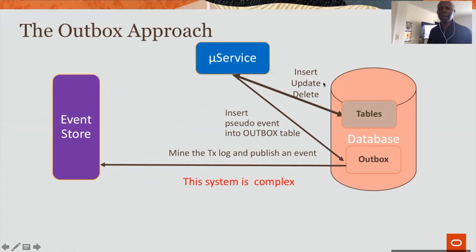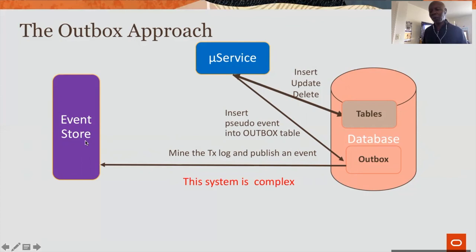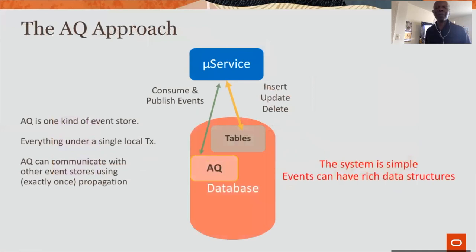The outbox solution works like this. You get a connection, make data changes — inserts, updates, and deletes to your schema across multiple tables. You also insert a pseudo-event into a pseudo table called the outbox table. Then you commit — it's a local commit. But subsequent steps require a process which will tail the transaction log and publish an event from the transaction log to the event store. The event store is a separate entity, making it a two-step operation. This is a little complex and has some impact on scalability.